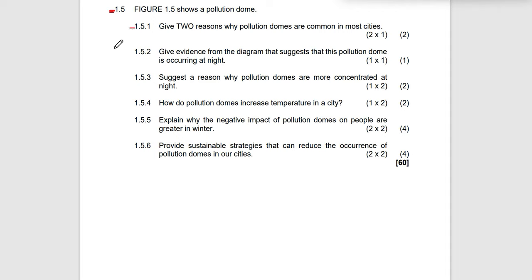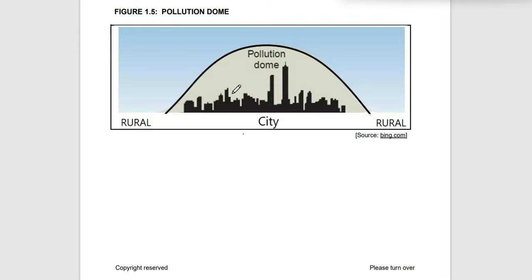Question 1.5.1: Give two reasons why pollution domes are more common in most cities. In cities, pollution domes are mainly related to the release and emission of pollutants. First, there is more industrial activity taking place, which leads to the release of carbon dioxide and other greenhouse gases. Second, more vehicles mean more combustion reactions, which also leads to the release of carbon dioxide.